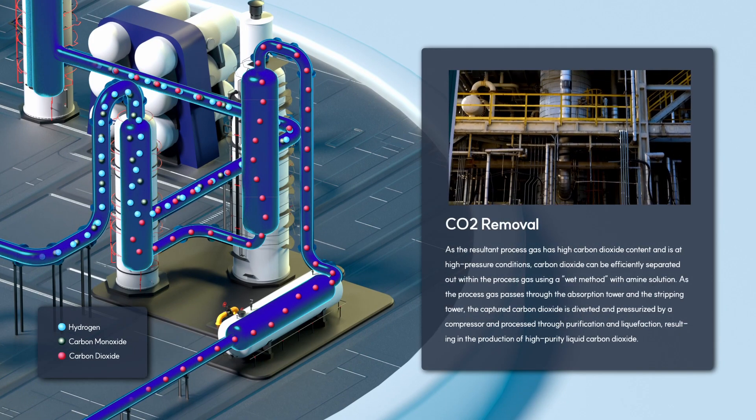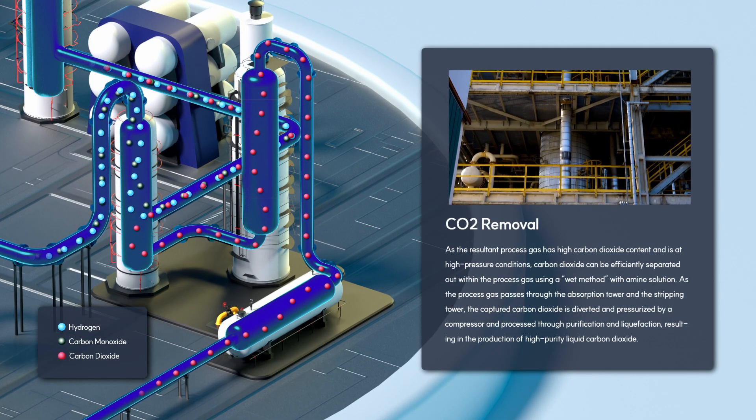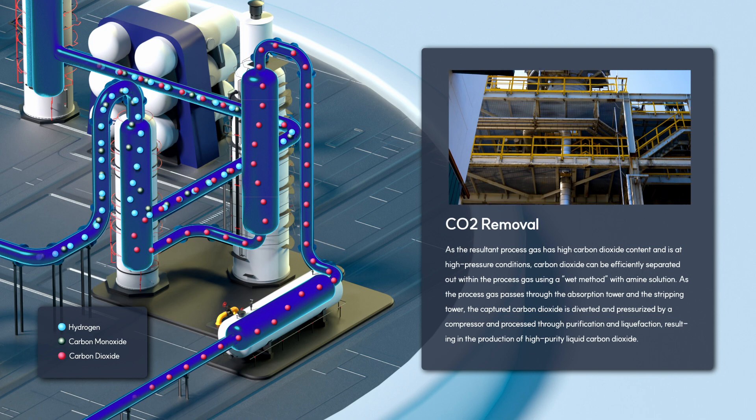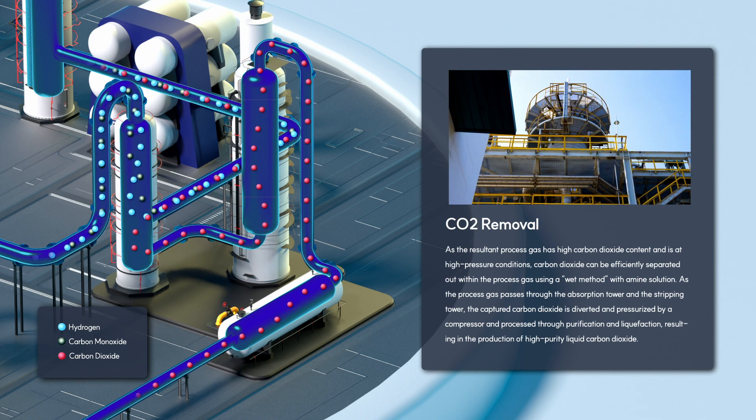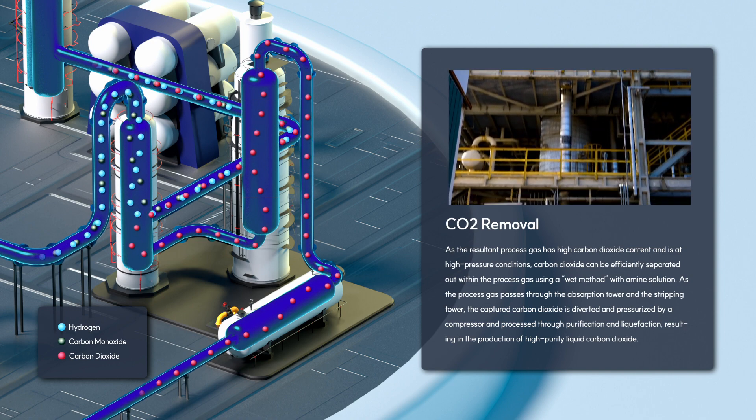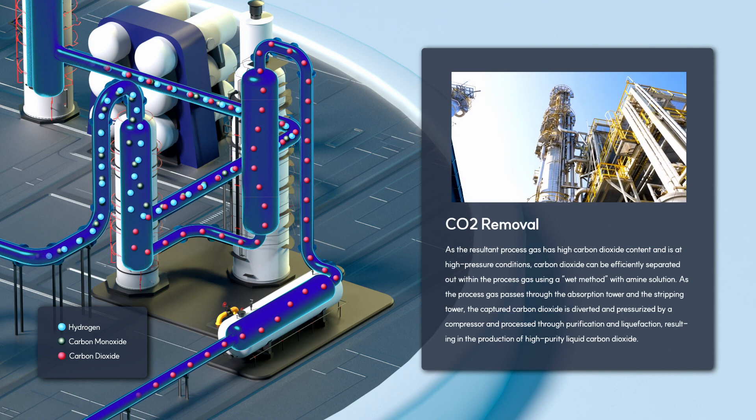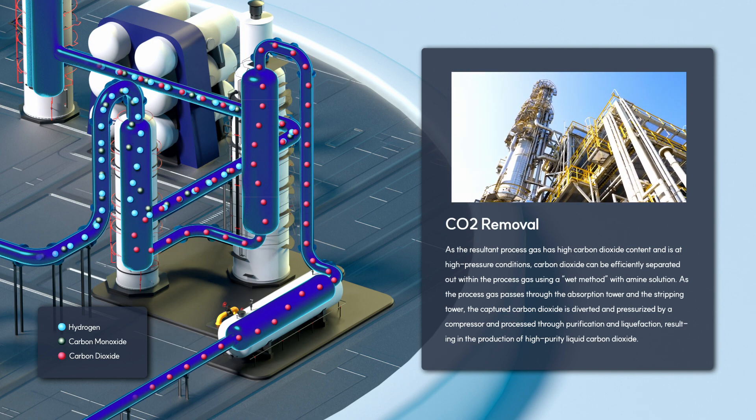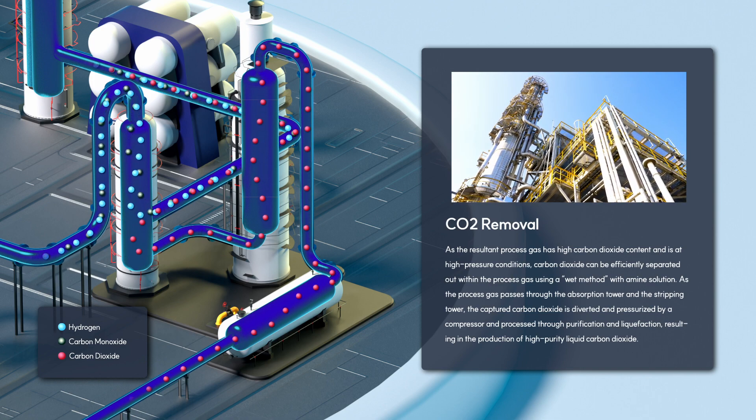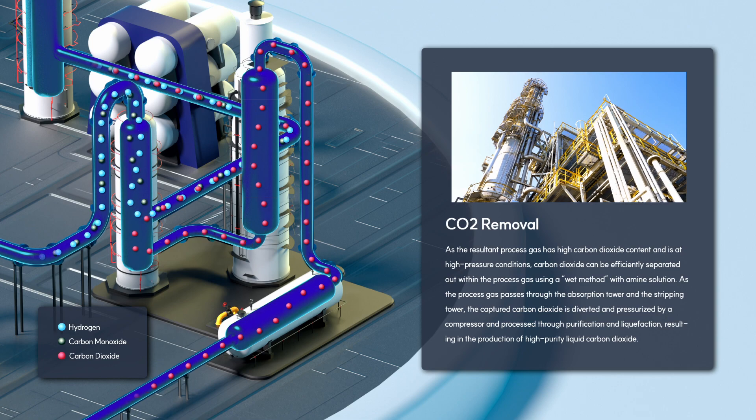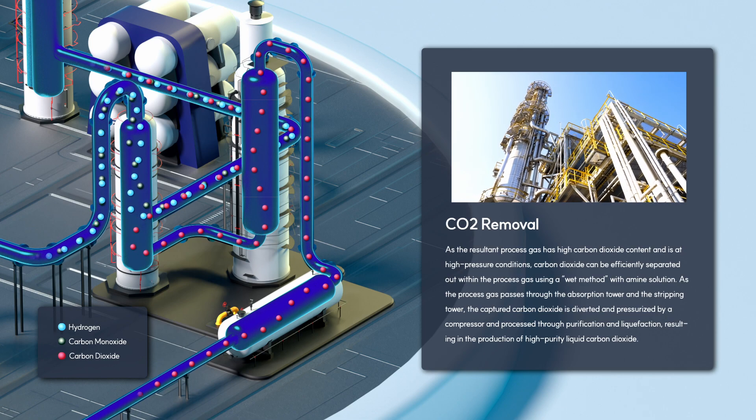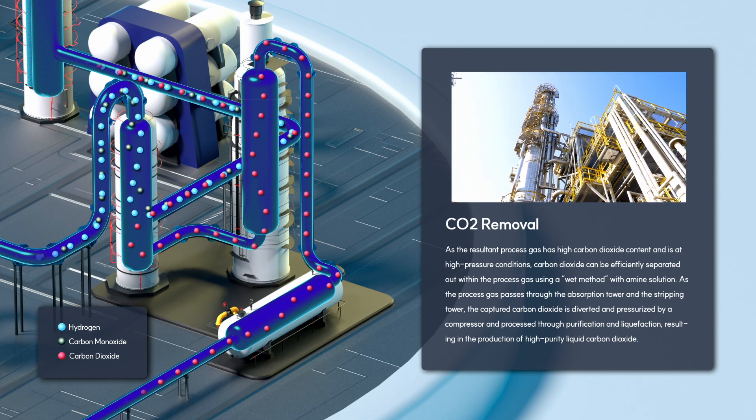As the resultant process gas has high carbon dioxide content and is at high pressure conditions, carbon dioxide can be efficiently separated using a wet method with amine solution. As the process gas passes through the absorption tower and stripping tower, the captured carbon dioxide is diverted, pressurized by a compressor, and processed through purification and liquefaction, resulting in high-purity liquid carbon dioxide.